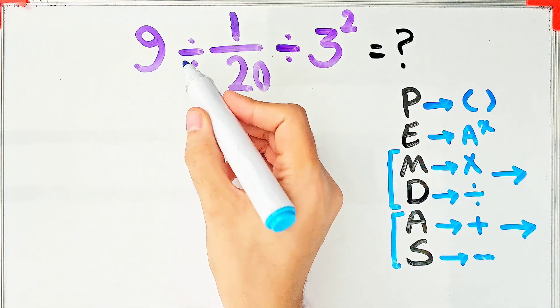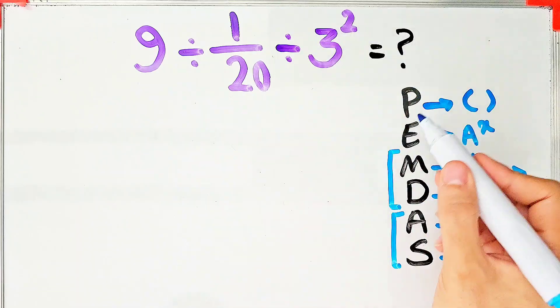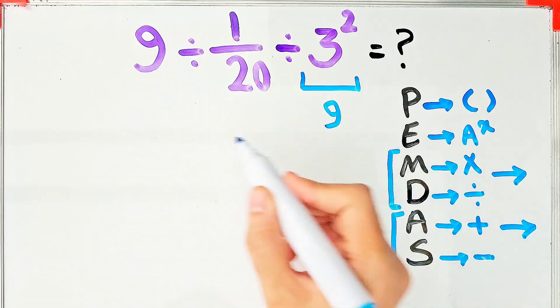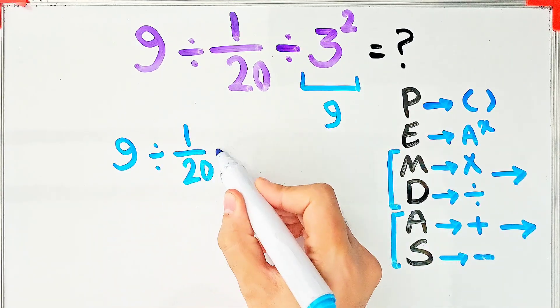In this question, we have two divisions and one exponent. First, we simplify the exponent. 3 to the power of 2 equals 9. Now we have 9 divided by 1 over 20, then divided by 9.